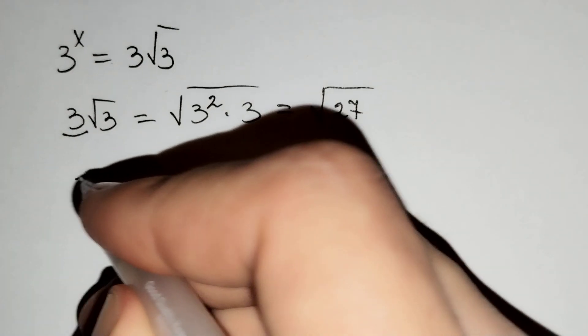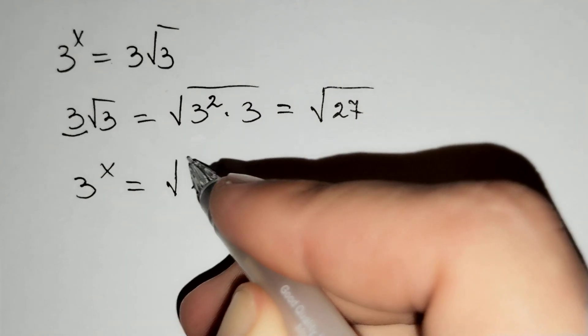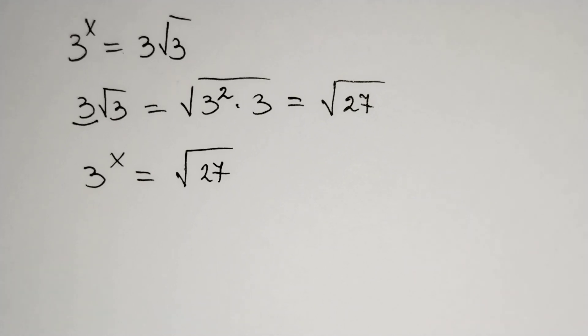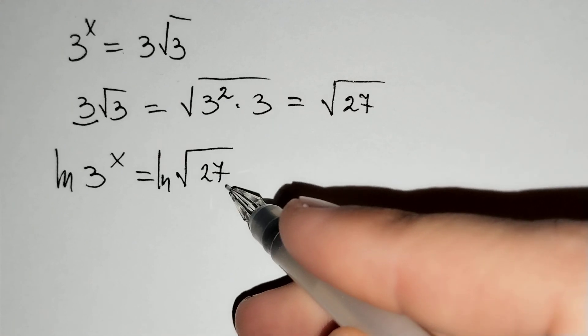Then 3^x equals the square root of 27. If we apply ln to both sides, ln(3^x) equals ln(√27).